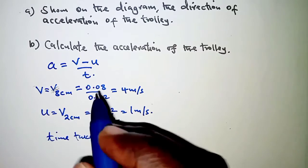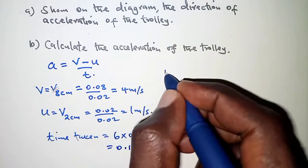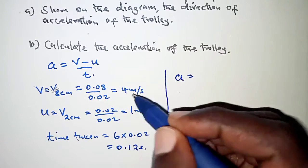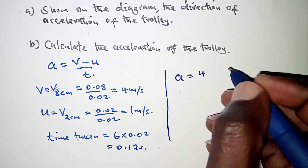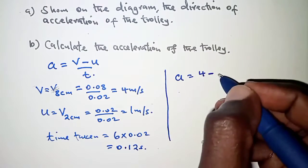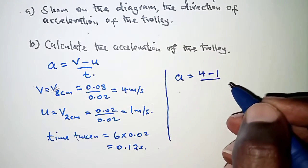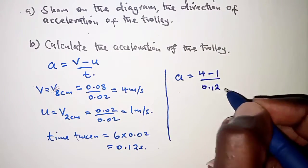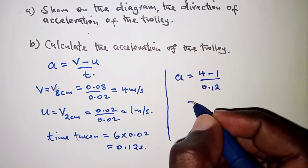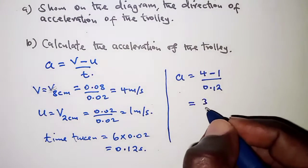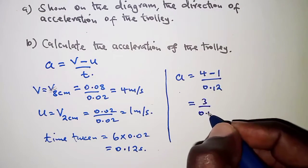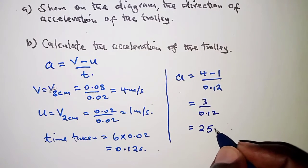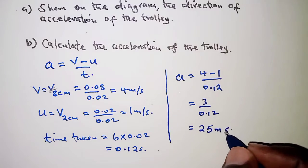With this we can now get the acceleration. The acceleration of the trolley is the final velocity of 4 meters per second minus the initial velocity of 1 meter per second, over the time taken of 0.12 seconds. That works out to 3 over 0.12, which is 25 meters per second squared.